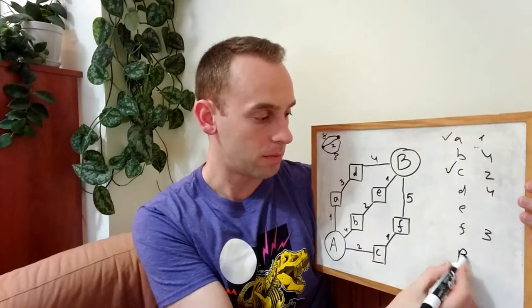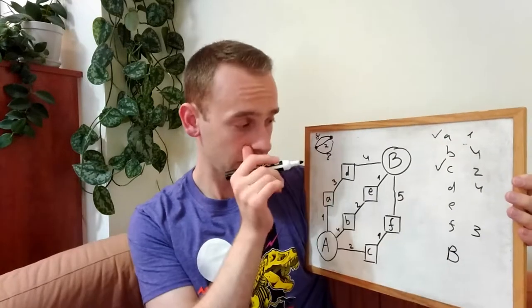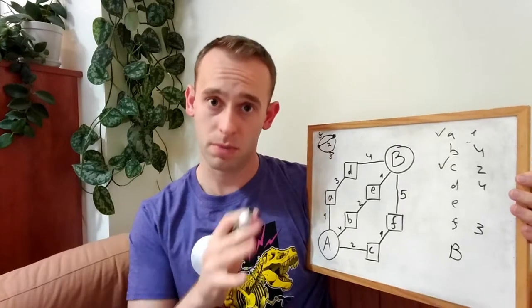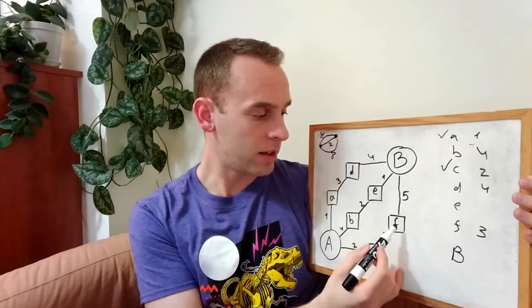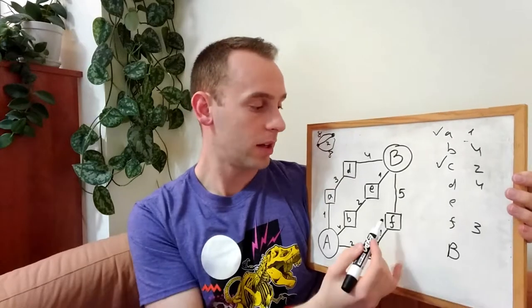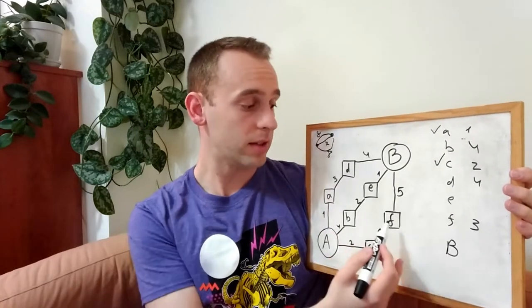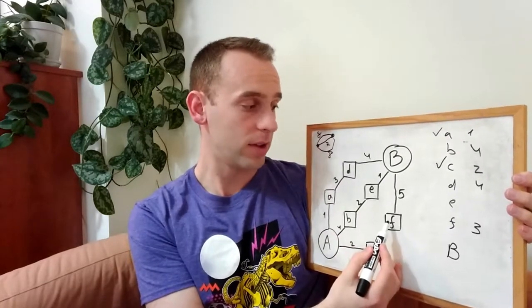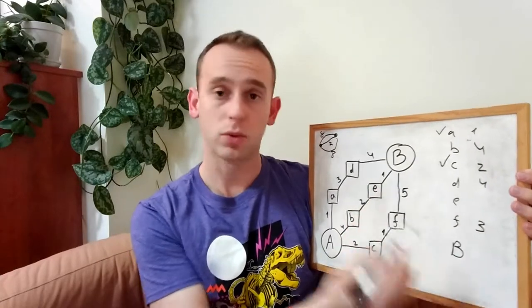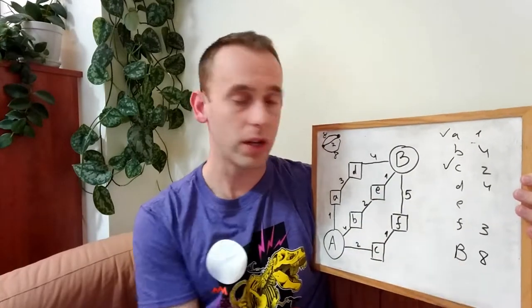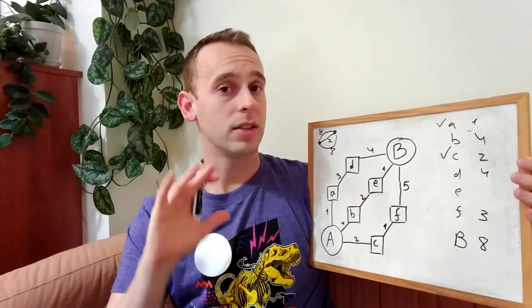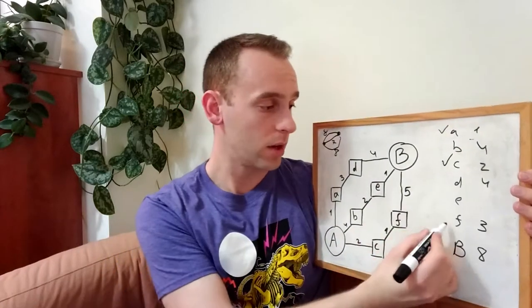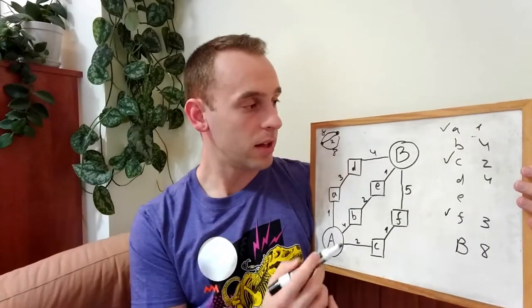And we'll do it again for the next node, which is F. F's neighbor is actually B, the big B, and we're already reaching B, but we will not stop there. So let's see - the distance to F is 3 from node A. The distance from F to B is 5, so together it will be 8. In the BFS algorithm, we'll finish here, but in Dijkstra we will not finish here.